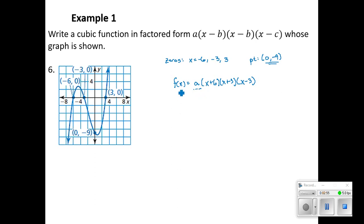So f(x), that's the height of the function, the y value. We're going to use the y value of that point, and we're going to solve for a. So the x value for that point is 0. 0 plus 6, times 0 plus 3, times 0 minus 3. So -9 equals a times 6 times 9, 54. And divide both sides by 54, we find a equals 1/6.